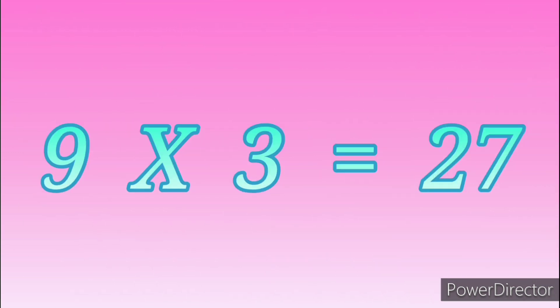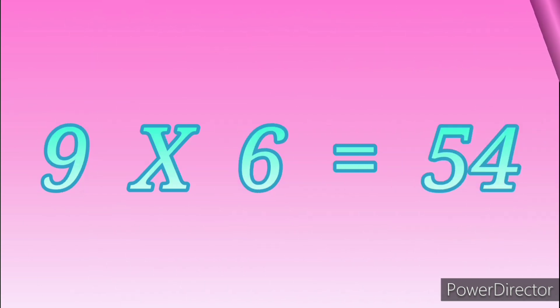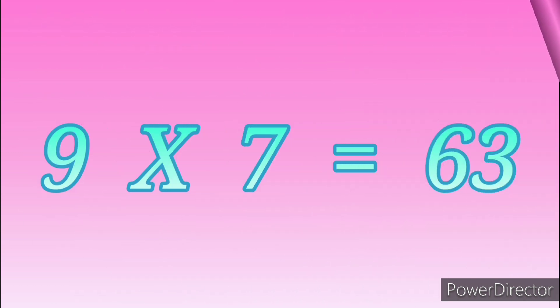9 threes are 27. 9 fours are 36. 9 fives are 45. 9 sixes are 54.